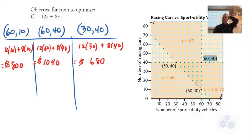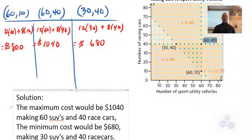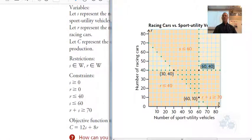Now we can easily see between these three values which one is our maximum cost, which one is our minimum cost. You would answer the question in a word sentence here because it's a word problem. You'd say the maximum cost comes when the company makes 60 sport utility vehicle cars and 40 race cars. That's the maximum cost. The minimum cost that would fit in this feasible region would be making 30 SUVs and 40 race cars. And you would state what those answers are. So you would write a word sentence like that summarizing what we found to answer that question.